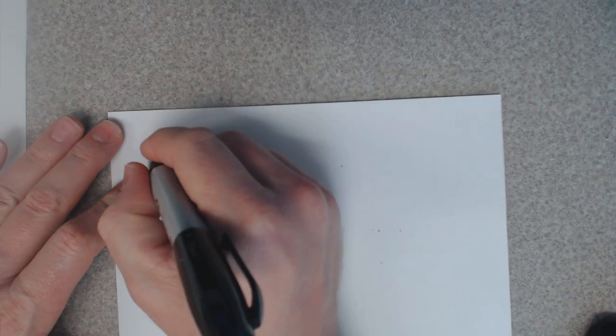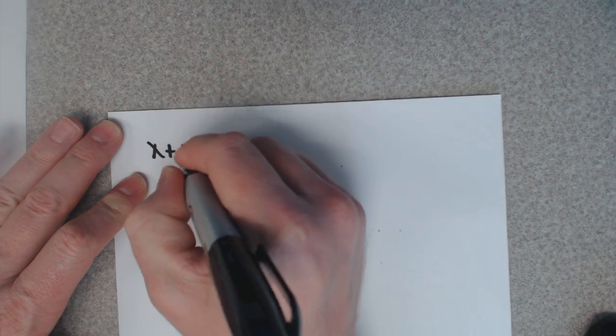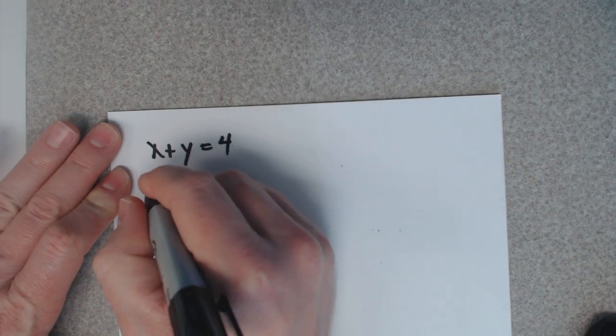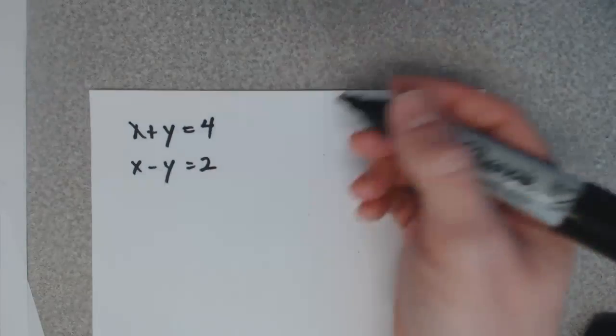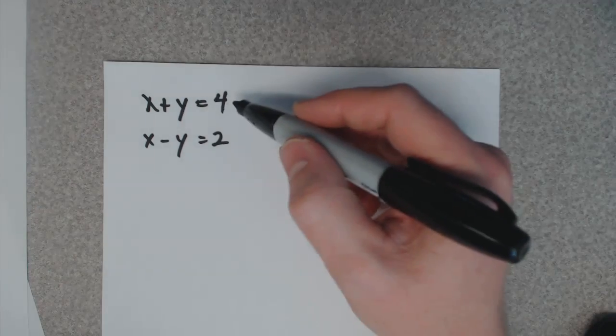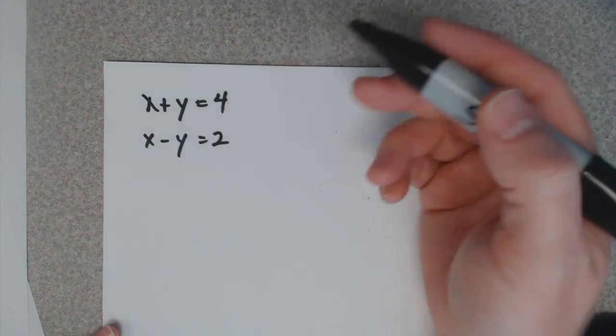I'm going to assume that you know how to write these in a matrix equation. Now I picked a real easy system here. Two numbers that add to give you four but subtract to give you two.